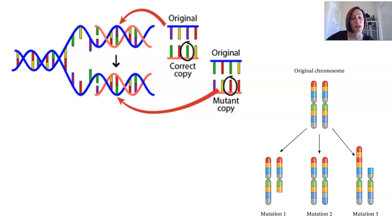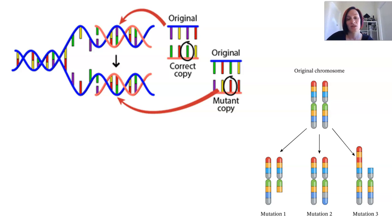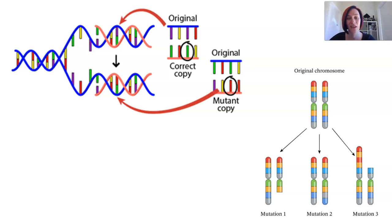Mutations can arise spontaneously due to DNA replication errors in S phase during cell division, or they can be induced by some kind of disturbance. These disturbances can be physical, chemical, or biological, and they are known as mutagens.